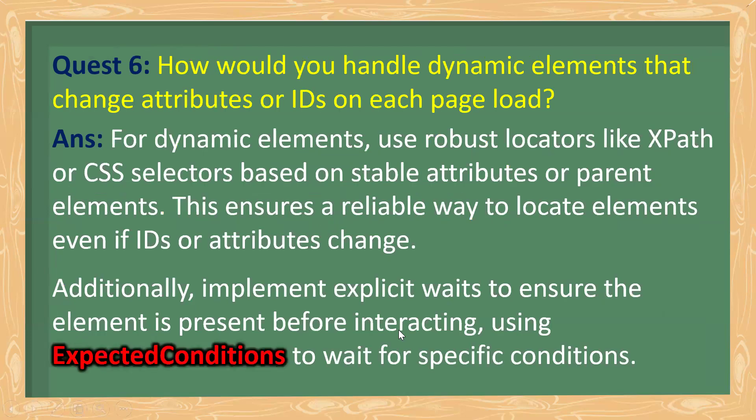How would you handle dynamic elements that change attributes or IDs on each page load? For dynamic elements, you should use robust locators like XPath or CSS selectors based on stable attributes of the parent element — this ensures a reliable way to locate elements even if IDs or attributes change. Additionally, implement explicit waits using Expected Conditions to ensure the element is present before interacting, with conditions like element present, visible, or clickable.